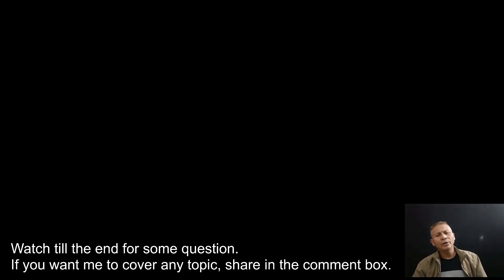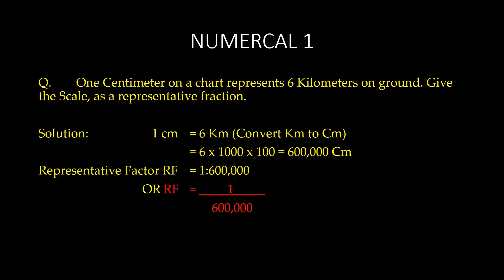Numerical one: 1 centimeter on a chart represents 6 kilometers on the ground. Give the scale as a representative fraction. Since 1 cm equals 6 km, I multiply 6 by 1000 to get 6000 meters, then convert to centimeters to get 600,000 centimeters. So 1 centimeter on the chart represents 600,000 centimeters on the ground. The representative fraction is therefore 1 is to 600,000.